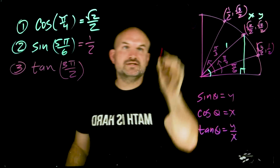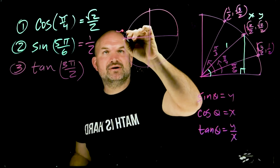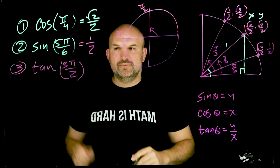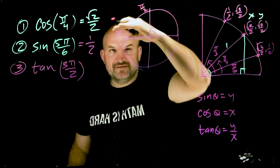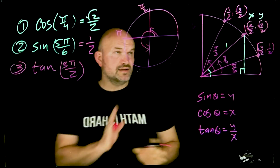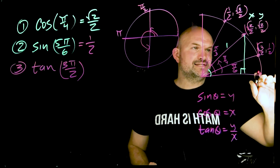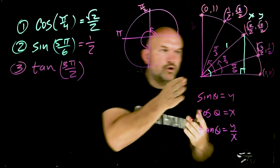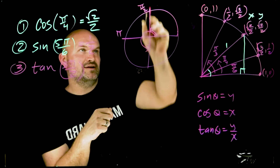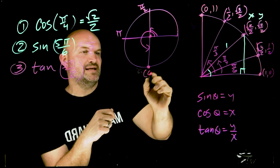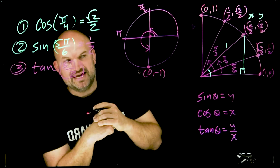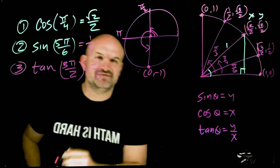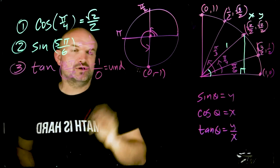Next is tangent of 3π/2. Halfway around the circle is π, half of that is π/2, so three π/2 lands at the bottom of the circle. The coordinate point there is (0, −1). Tangent represents y over x, so that's −1 over 0. Since we cannot divide by zero, this is an undefined value.